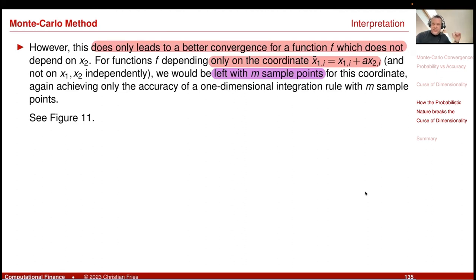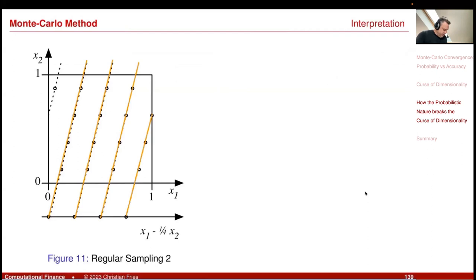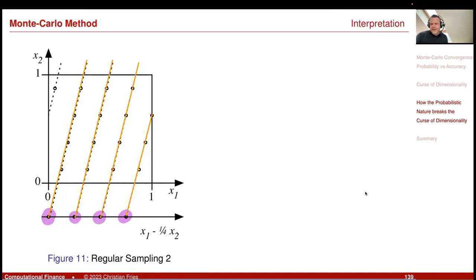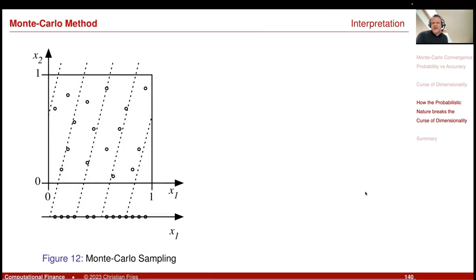So we are again left with only m sample points for the coordinate where the function has variability, and the convergence is again of order 1/m^p with your classical integration. Now look at what the Monte Carlo method does: it places the points randomly, so there is actually no structure.